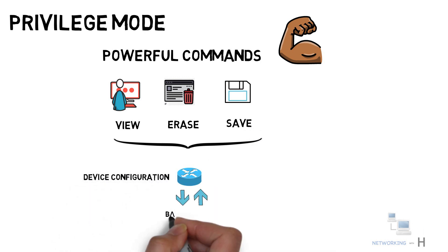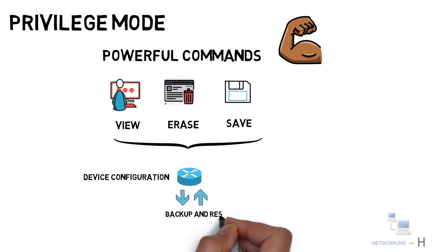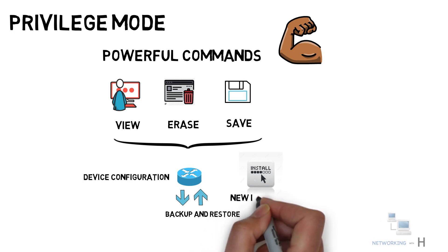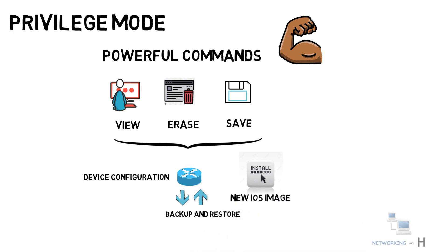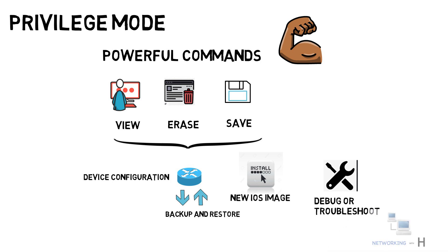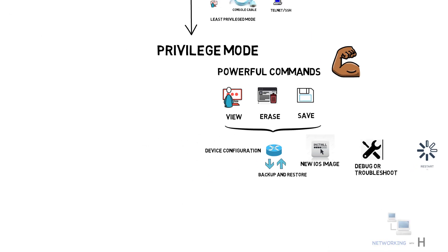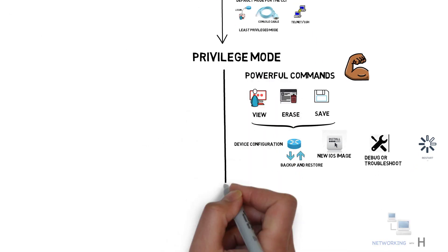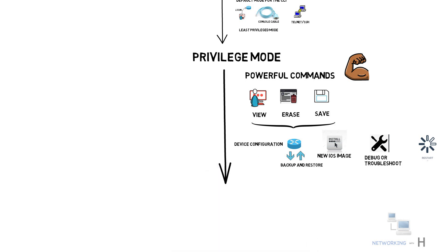This mode allows users to take backup of the current device configuration or to restore the configuration from backup. It allows installing a new IOS image file, debugging or troubleshooting the device, or restarting or reloading the device. From privilege mode you can access all the configuration command modes and their sub-modes.